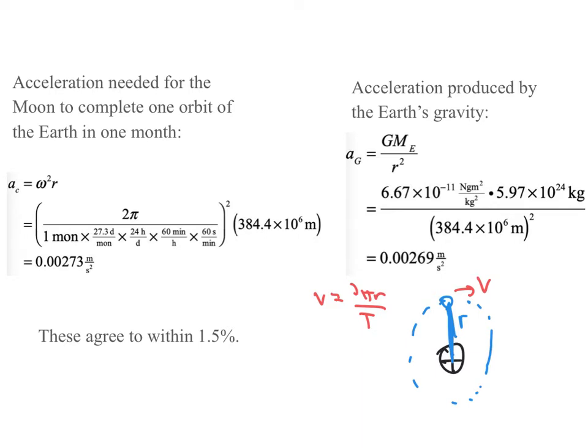And so we can figure out what is the acceleration that the moon would need to have. Well, Newton, having invented dynamics, understands that there is centripetal motion, and he needs v² over r. Using this bit, he's able to turn that into this, and finds that the acceleration it takes to go around the earth centripetally would be something like 0.00273 meters per second squared.